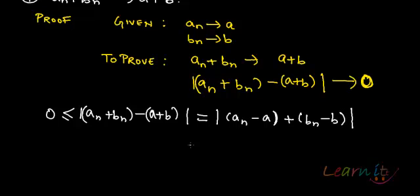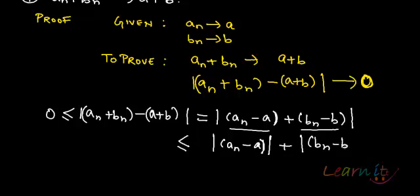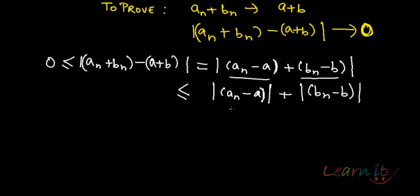So by triangular inequality of real numbers, what do I know? This is one term, this is another term. This will always be less than or equal to the modulus of single terms, sum of the modulus of single terms. So this will be less than or equal to An minus A mod plus Bn minus B mod.